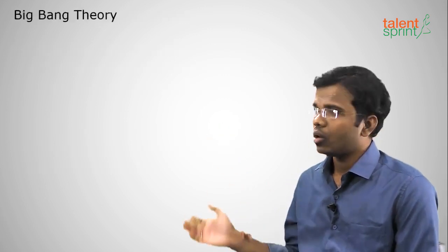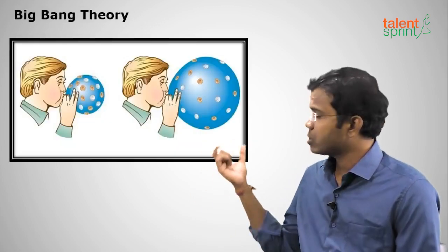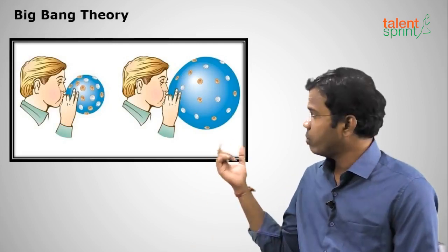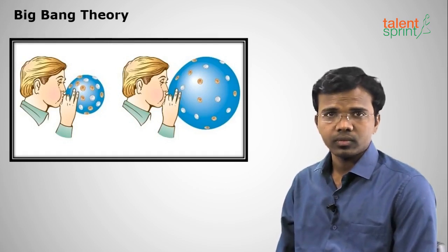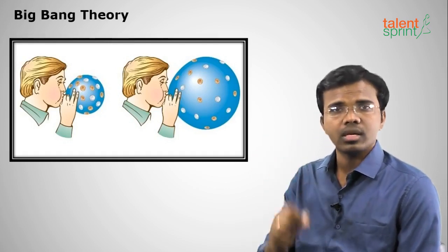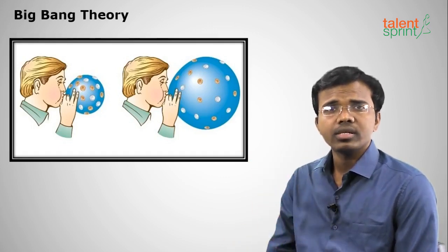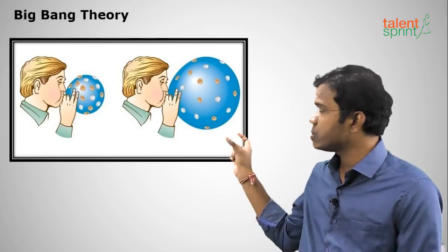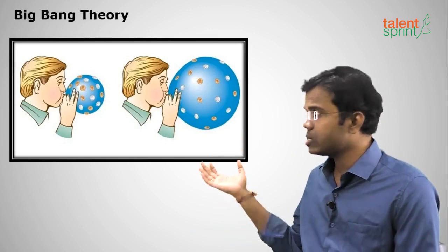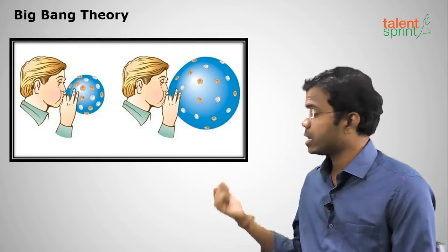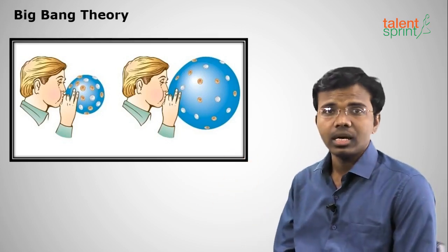A simple example to illustrate the Big Bang: suppose a person is blowing a balloon with some points marked on it. As you blow the balloon, the distance between two points increases. Similarly, the distance between galaxies and stars keeps increasing day by day. That's why it is called the expanding universe hypothesis.